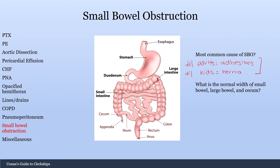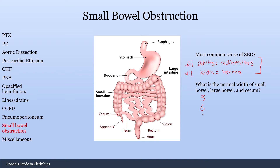What is the normal width of small bowel, large bowel, and the cecum? If you measure the thickness and see that it's too thick compared to what it normally should be, you could be more suspicious that there's some kind of obstruction or process causing it to be dilated. This is easy to remember with the 3-6-9 rule: 3 centimeters is the normal width of the small bowel, 6 centimeters is the normal width of the large bowel, and 9 centimeters is the normal width of the cecum. Anytime you go over 9-10 centimeters for the cecum, that's when you get concerned for a perforation.